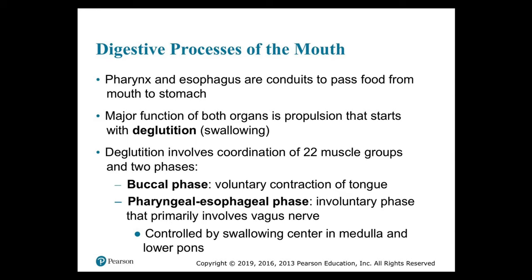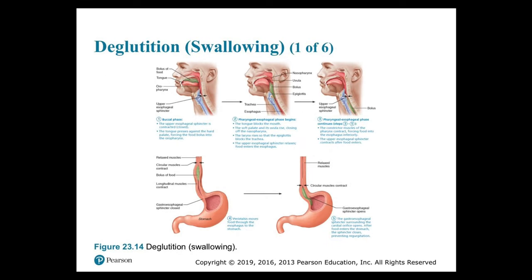The pharynx and esophagus are conduits to pass food from the mouth to the stomach. Their major function is propulsion, which starts with deglutition or swallowing. Deglutition involves coordination of 22 muscle groups and two phases: the buccal phase, which is a voluntary contraction of the tongue, and the pharyngeal-esophageal phase, which is an involuntary phase primarily involving the vagus nerve. This phase is controlled by the swallowing center in the medulla and lower pons of the brain.